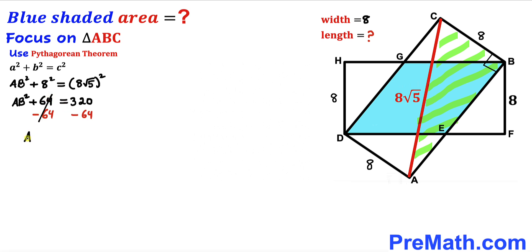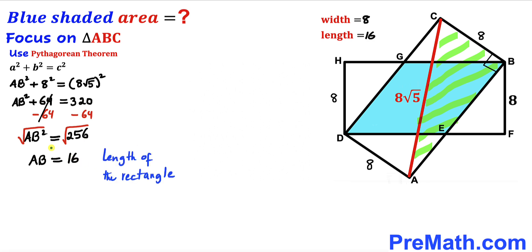After subtracting, AB² = 256. Taking the square root of both sides, our AB length turns out to be 16 units. Since AB represents the length of the rectangle, the length of this rectangle is 16 units.